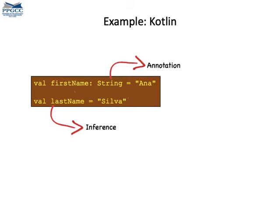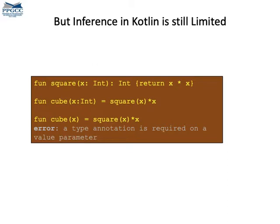Many programming languages use type inference. However, the extent to which they do it varies. Some languages are more limited. For instance, in Kotlin, the compiler can infer the type of some variables from the expressions used to initialize these variables. But Kotlin's inference algorithm has limitations. For instance, functions must have their arguments annotated with typing information.